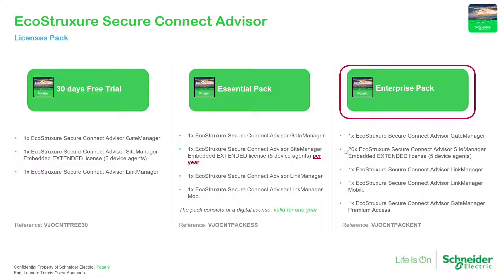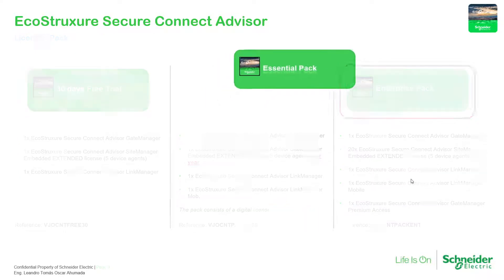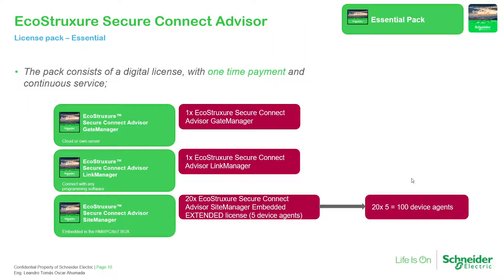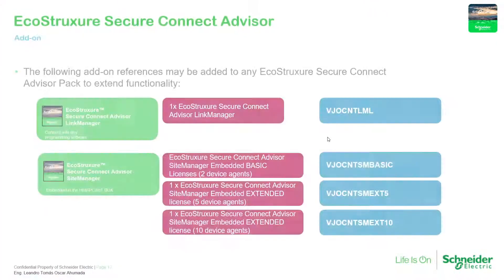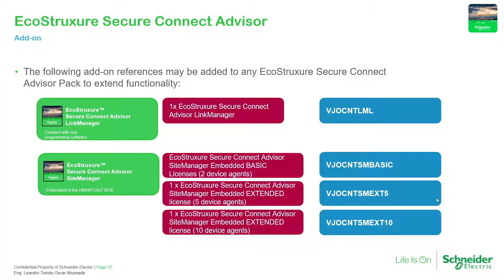The enterprise pack includes up to 20 extended licenses. Similar to the essential, but it is not accumulative — it is a one-time payment. If you want more licenses for additional HMIs or different technicians to be connected at the same time, we have the addons available as shown here.